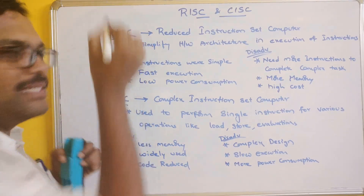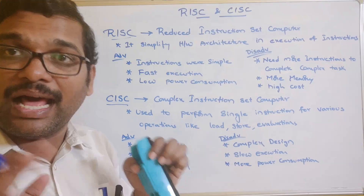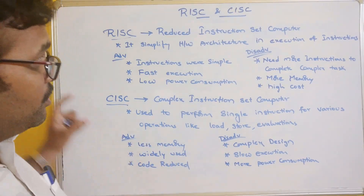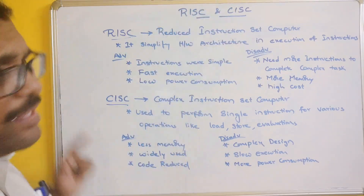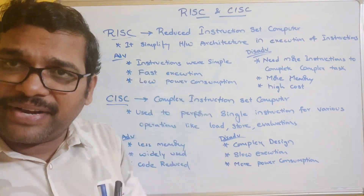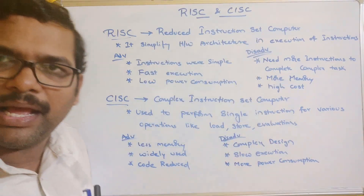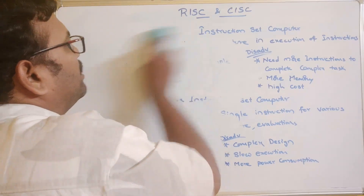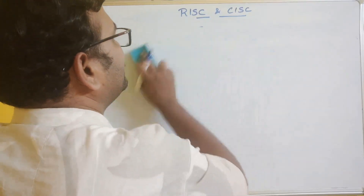These are the few advantages and disadvantages of CISC and RISC. Both are computer architectures based upon the instruction set. This is the complete overview of RISC and CISC. Now we will see the differences — we will write the same points in a different manner to show the major differences between CISC and RISC.